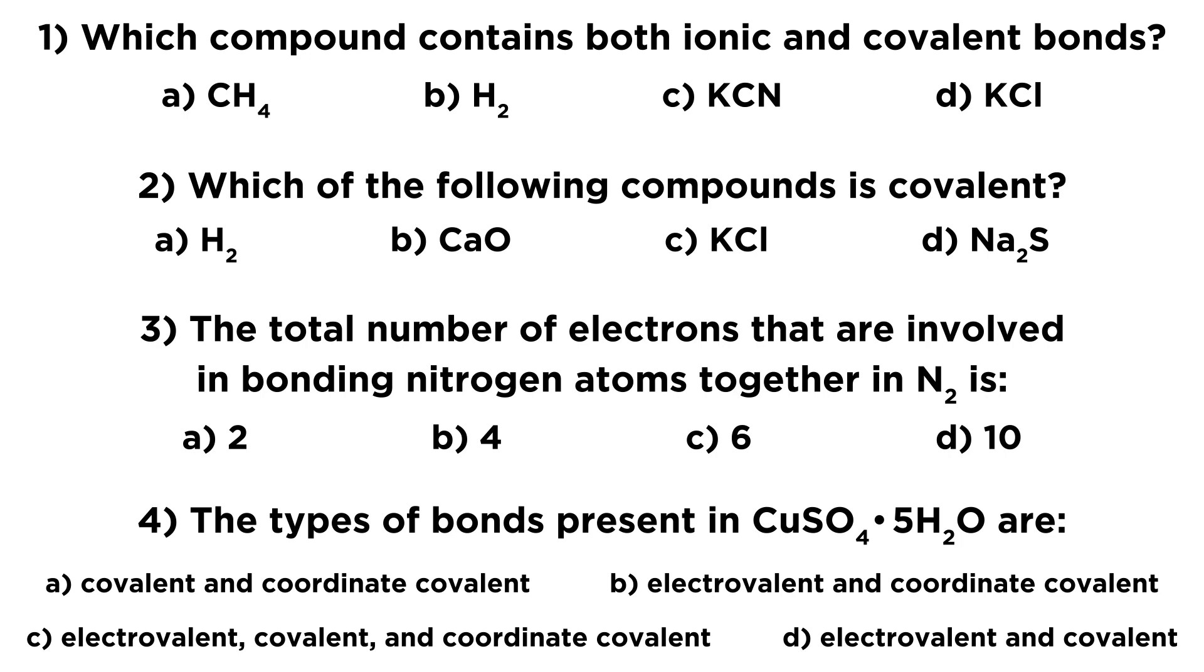The first question asks which compound contains both ionic and covalent bonds. We've got four options there. The second one asks which of the following compounds is covalent, and we've got another four options. The third asks the total number of electrons that are involved in bonding nitrogen atoms together in N2, with four options here. And lastly, the types of bonds present in copper sulfate pentahydrate are, and we've got four options there.